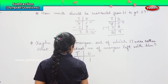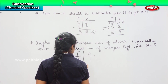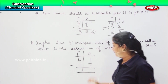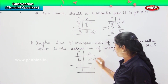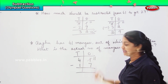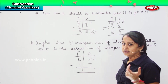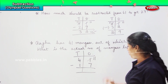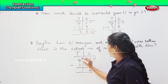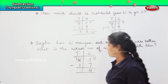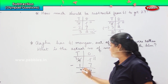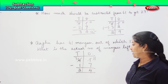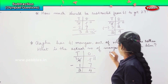So, 41 minus 17. Again, you need to borrow from the tens. So, 11 minus 7 — counting down: 10, 9, 8, 7, 6, 5, 4. That gives 4, and the tens digit becomes reduced by 1, giving 3. So, 3 minus 1 is 2. Which means he is having 24 mangoes left.